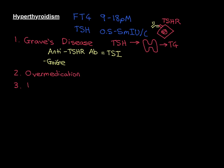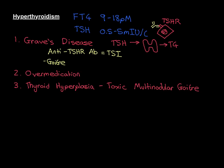Cause number three is thyroid hyperplasia — the thyroid gland getting too big for some reason. Hyperplasia means over-division of cells. There are two major different examples: one is called toxic multinodular goitre, and the other is called a toxic thyroid adenoma. Toxic multinodular goitre is a reasonably common cause of hyperthyroidism. If we discount over-medication, after Graves' disease it is the second biggest cause of hyperthyroidism.